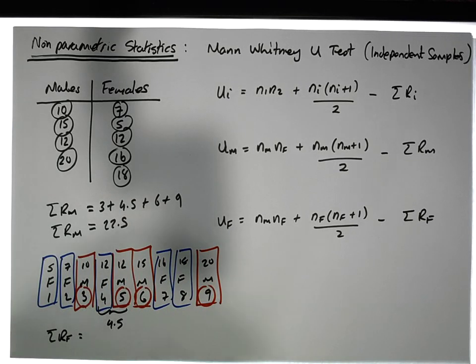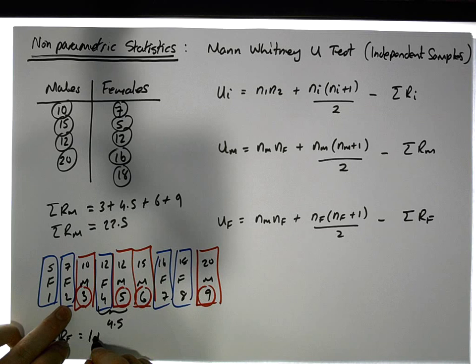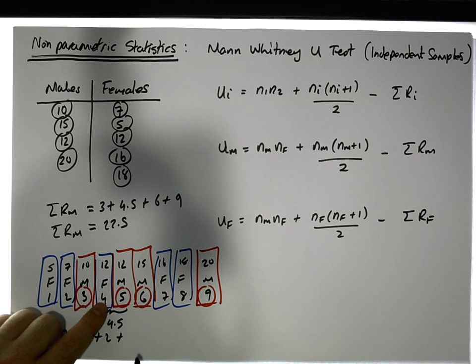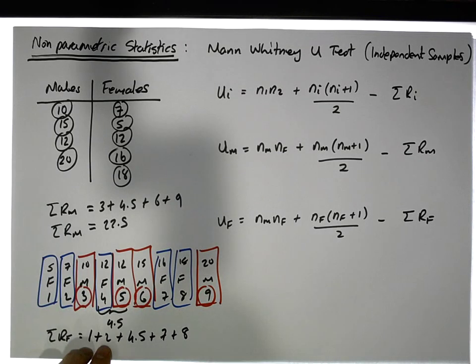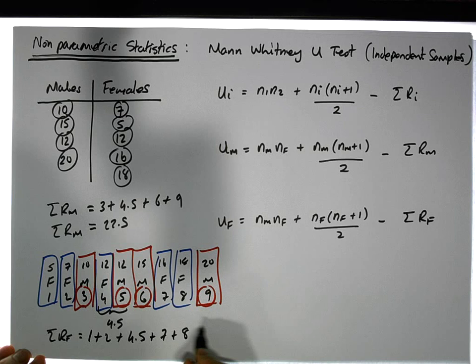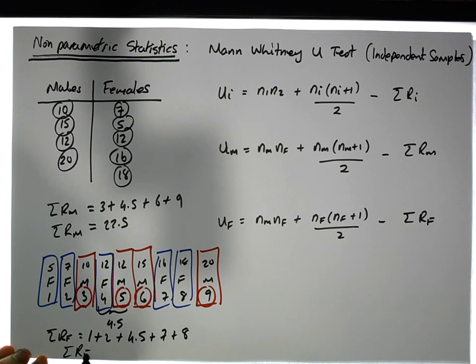And here, the ranks that have been assigned to them are 1 plus 2 plus this one here is actually 4.5 because it was tied, plus 7 and plus 8, which gives us 1 and 2 is 3, but that 7 is 10, that's 18, which also gives us for the sum of the ranks of the females 22.5.